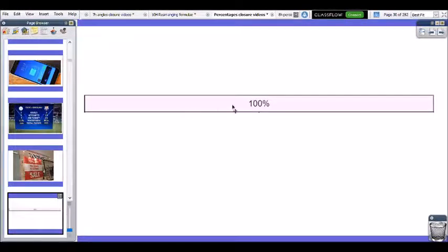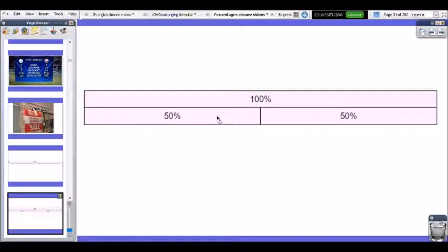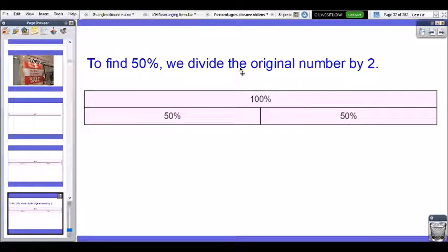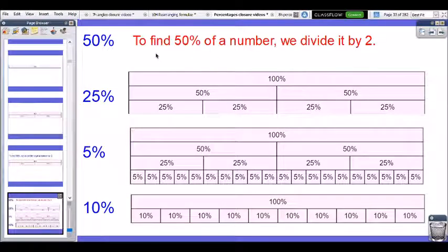So let's say 100% represents your original amount. If 100% represents a number, have a look at how 50% fits into 100%. Well, 50% fits in exactly two times, which is why to find 50% of a number, we divide the original number by 2. So if that's how to find 50%, let's think how we find 25%, 5% and 10%.